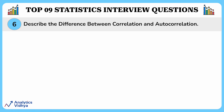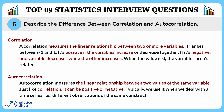We'll now look at an advanced level question on the difference between correlation and autocorrelation. Correlation measures the linear relationship between two variables — it measures how two variables change together, indicating the strength and direction of their relationship. Autocorrelation, on the other hand, measures the linear relationship between values of the same variable. It specifically looks at how a variable correlates with its own past values over time, helping to identify patterns and trends within a single variable's historical data.